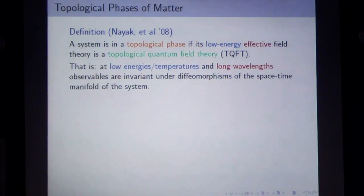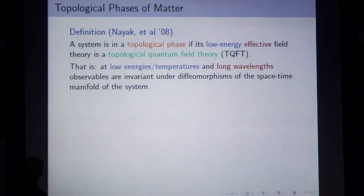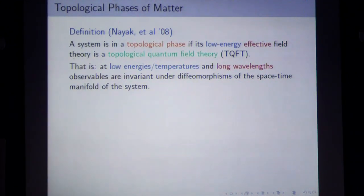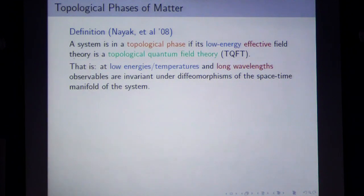Long wavelengths — that's what the effective field theory means — means that as long as we stay above some particular length scale, if our quasi-particles are kept far enough apart, then this description is correct. Under these conditions, the observables are invariant under diffeomorphisms of space-time. This is why it's topological: there's no dynamics. That's been washed away because this is an effective field theory.